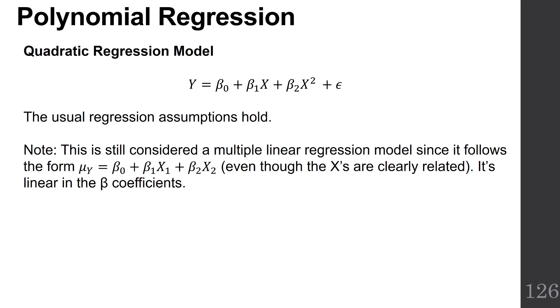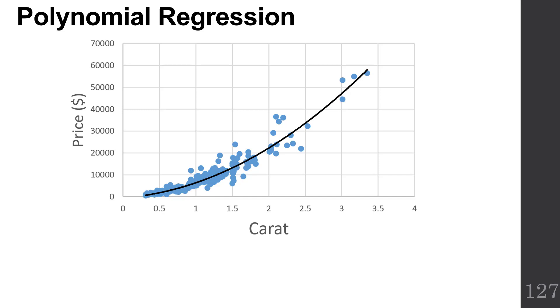Note that this is still considered linear regression since it follows the form of having β₀ + β₁ times a predictor plus β₂ times a predictor, even though the X's are clearly related. It is linear in the beta coefficients, so that's why we call it still linear.